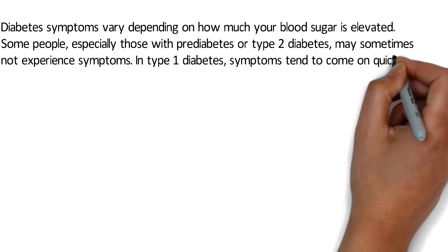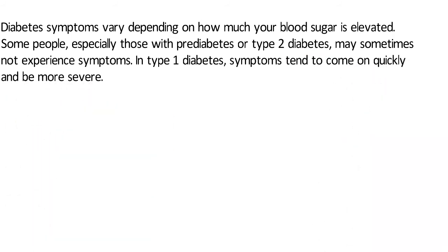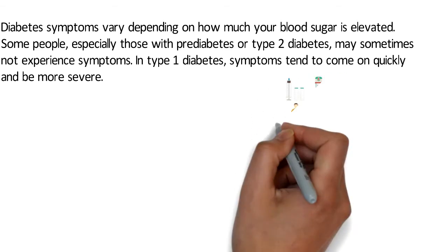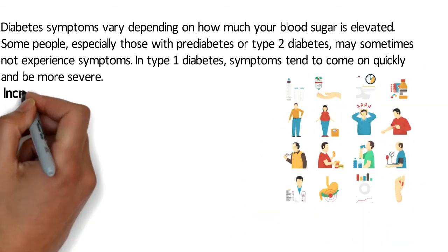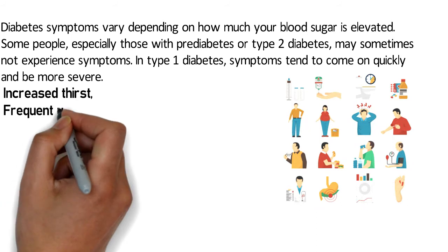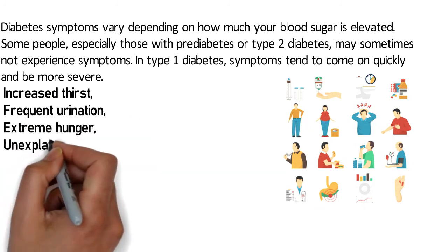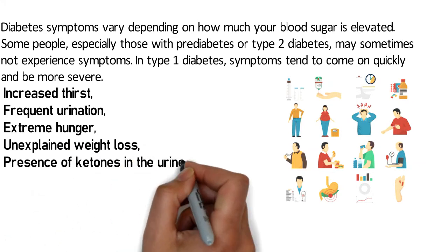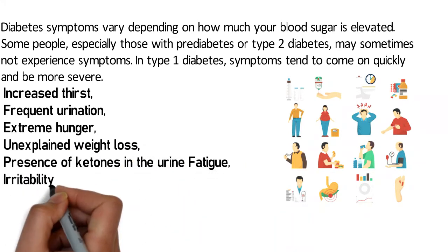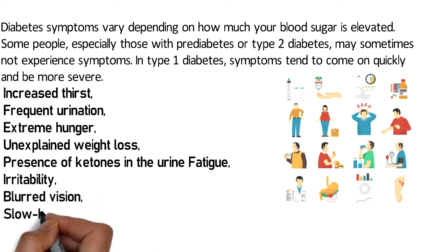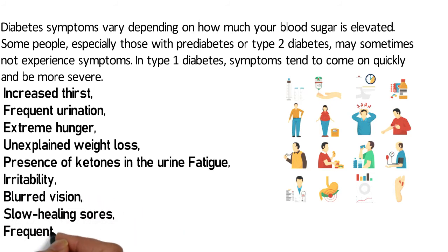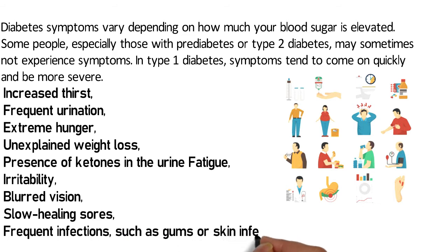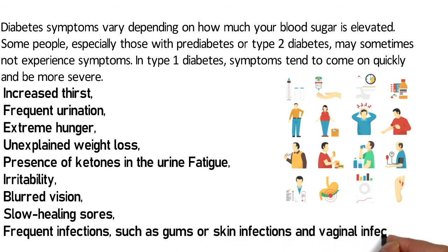In type 1 diabetes, symptoms tend to come on quickly and be more severe. Some of the signs and symptoms of type 1 and type 2 diabetes are: increased thirst, frequent urination, extreme hunger, unexplained weight loss, presence of ketones in the urine, fatigue, irritability, blurred vision, slow-healing sores, and frequent infections such as gum, skin, or vaginal infections.